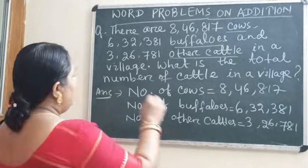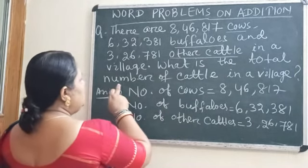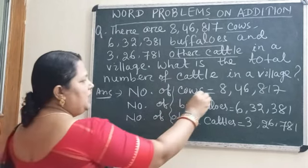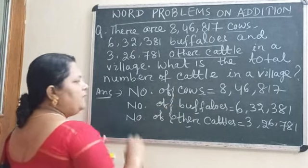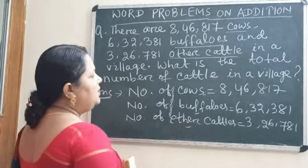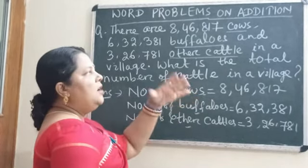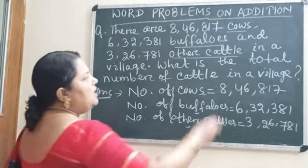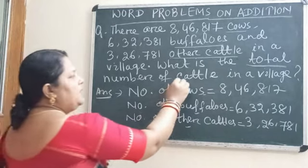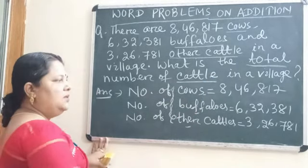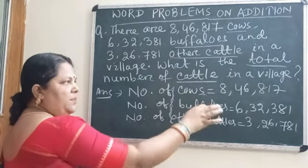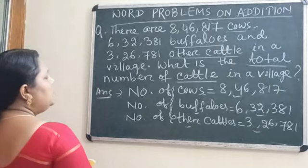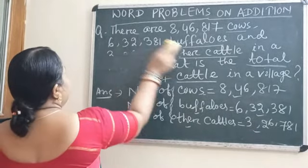The second part is your process. The question is asking: find the total number of cattle in a village. We have to find the total number — how many cows, how many buffaloes, how many other cattle — and get a single value. What will be the process? Whether to add, subtract, multiply, or divide? Simply, you will add the values because it is asking for the total. So you will find the sum of all three numbers.